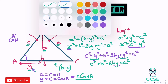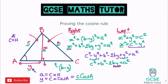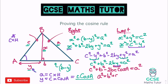Substituting y = c·cosA into our formula: a² = c² + b² − 2b(c·cosA), which gives a² = c² + b² − 2bc·cosA. Rewriting in the conventional order: a² = b² + c² − 2bc·cosA. That is the proof of the cosine rule.